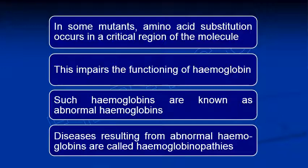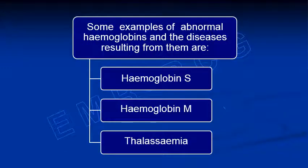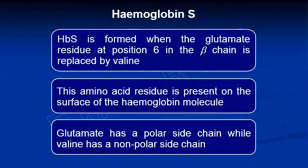When the mutation impairs hemoglobin function and causes disease, we call these conditions hemoglobinopathies — diseases of the hemoglobin. Examples of hemoglobinopathies include hemoglobin S, hemoglobin M, and thalassemia.